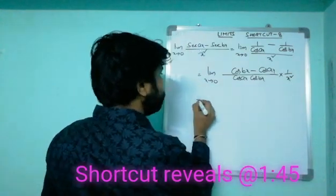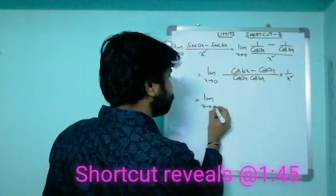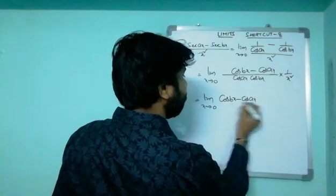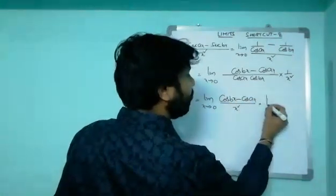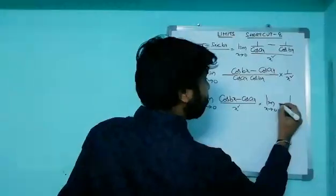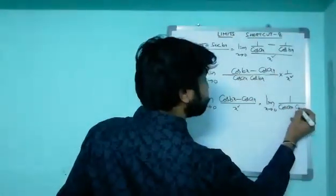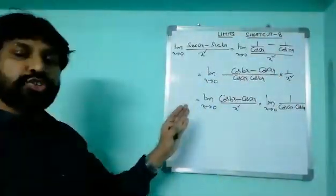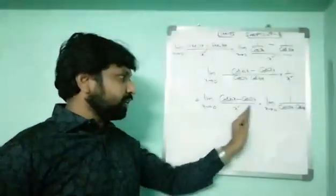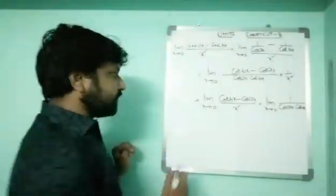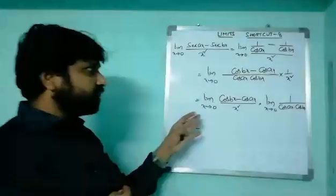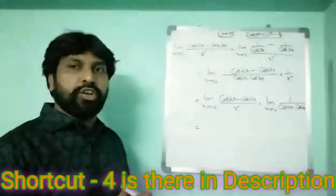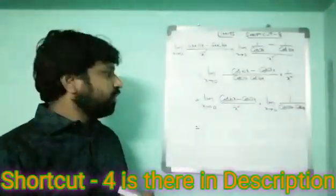This is nothing but one by x square. Now we express this as: limit x tends to zero of [cos(bx) minus cos(ax)] divided by x square, multiplied by limit x tends to zero of 1/[cos(ax)·cos(bx)]. We discussed this splitting in shortcut number four — check the description if you need to review it.